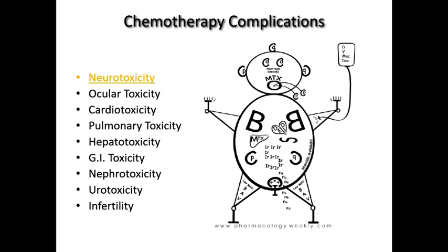Dactinomycin, vincas — so vincristine, vinorelbine and the like — as well as anthracyclines (dox written up there) are all vesicants, and we worry about extravasation with those agents, particularly anthracyclines. Mechlorethamine is an old nitrogen mustard agent that's not really used anymore.